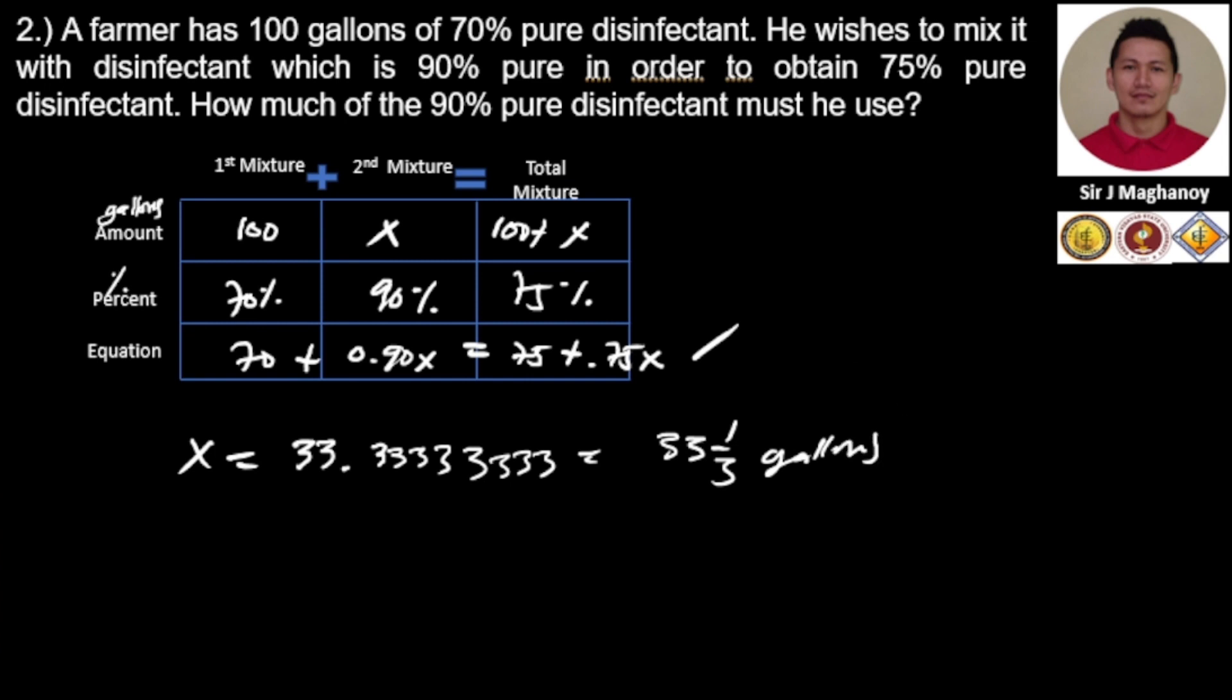So let's check if our answer is correct. We substitute the value of our X, which is 33 and one-third, to our equation. So here, 70 plus 90 times 33 and one-third.